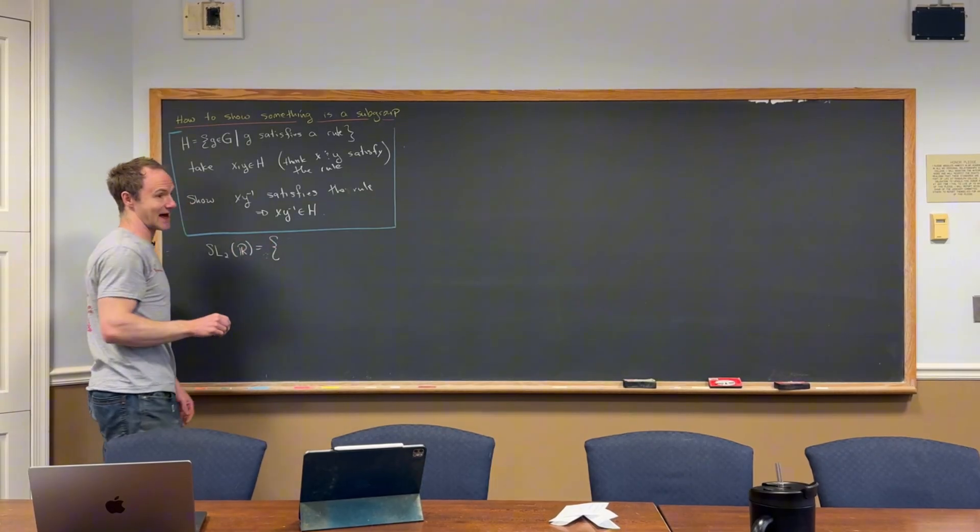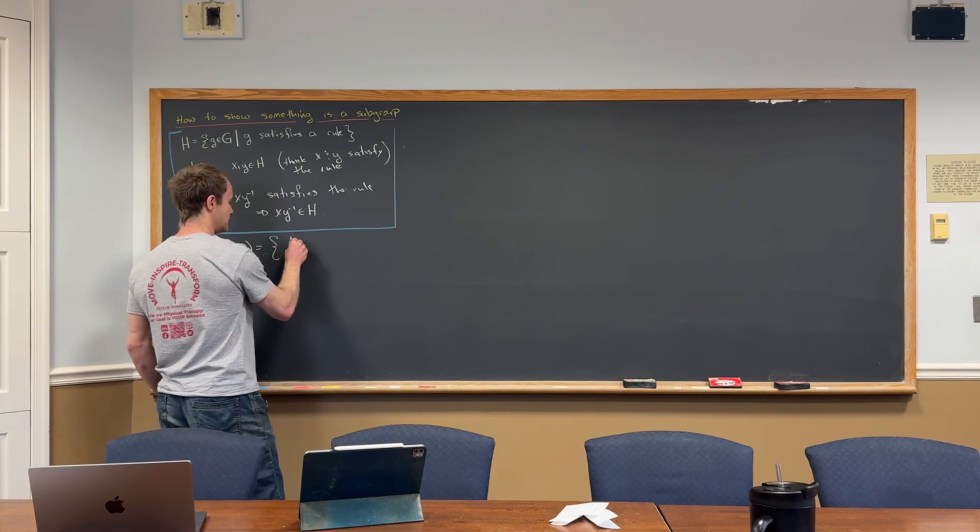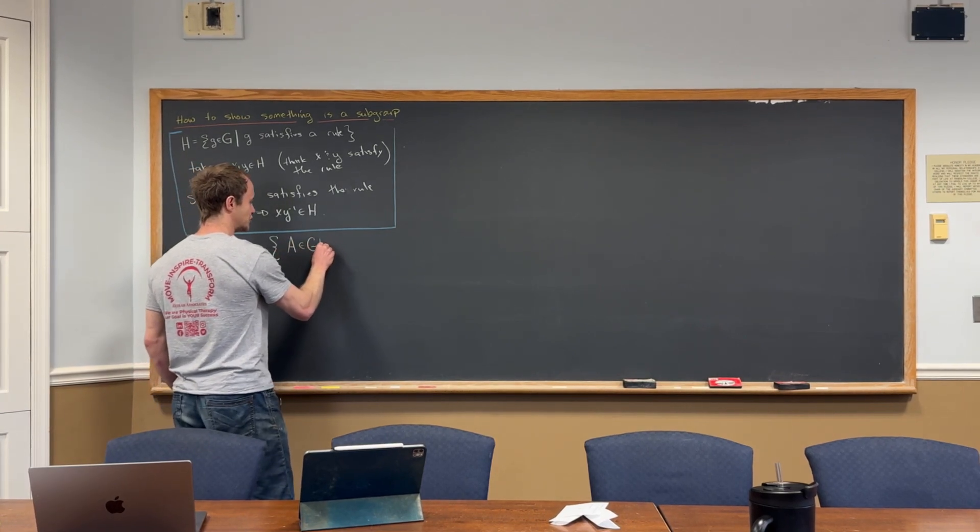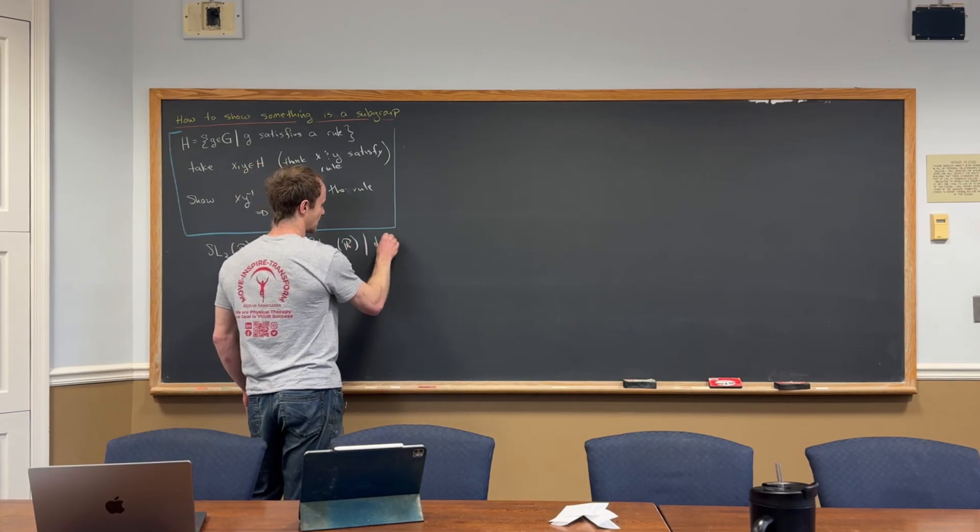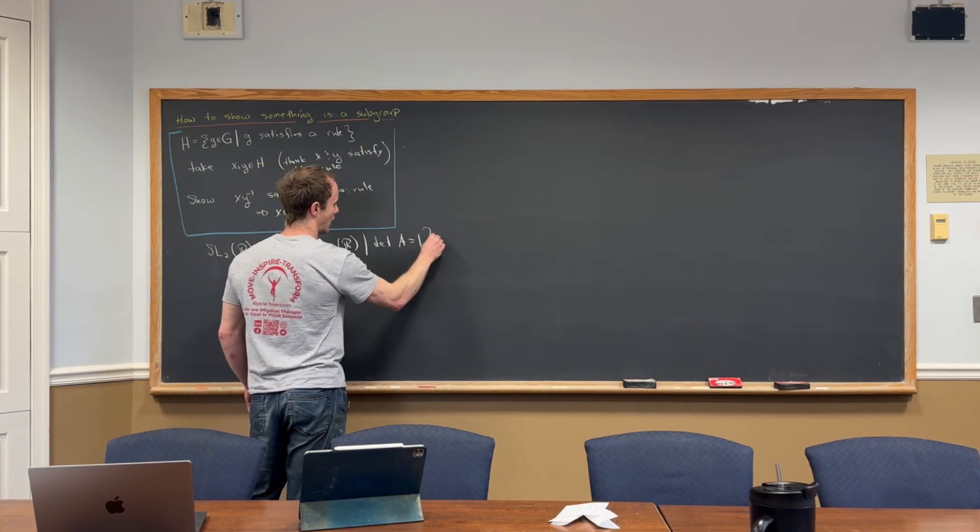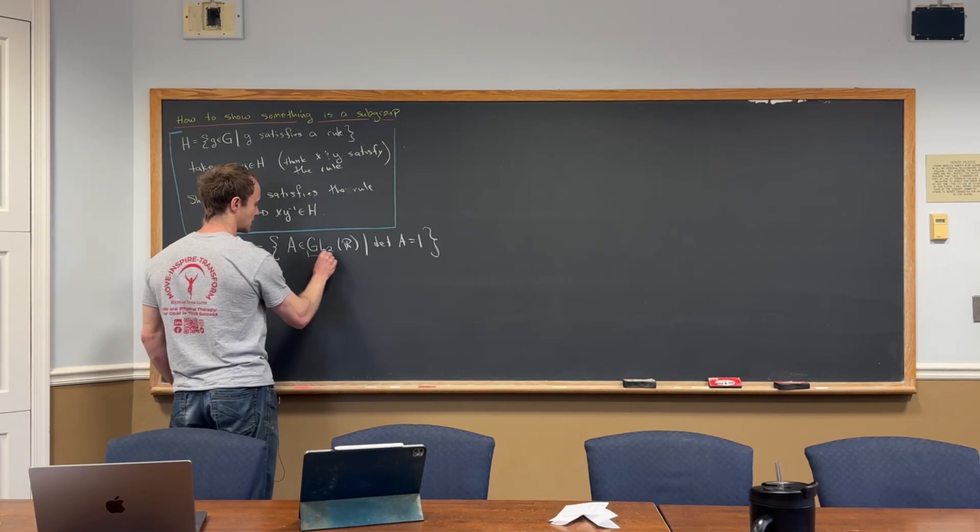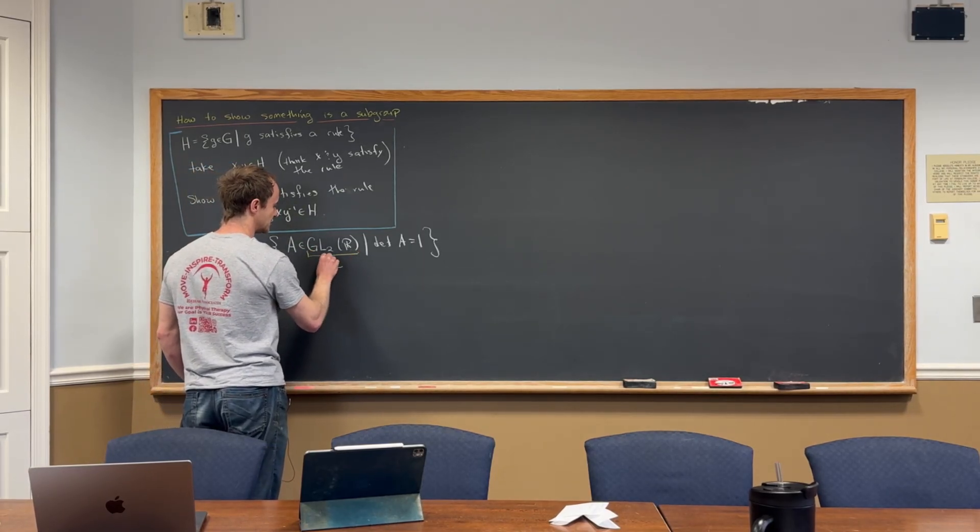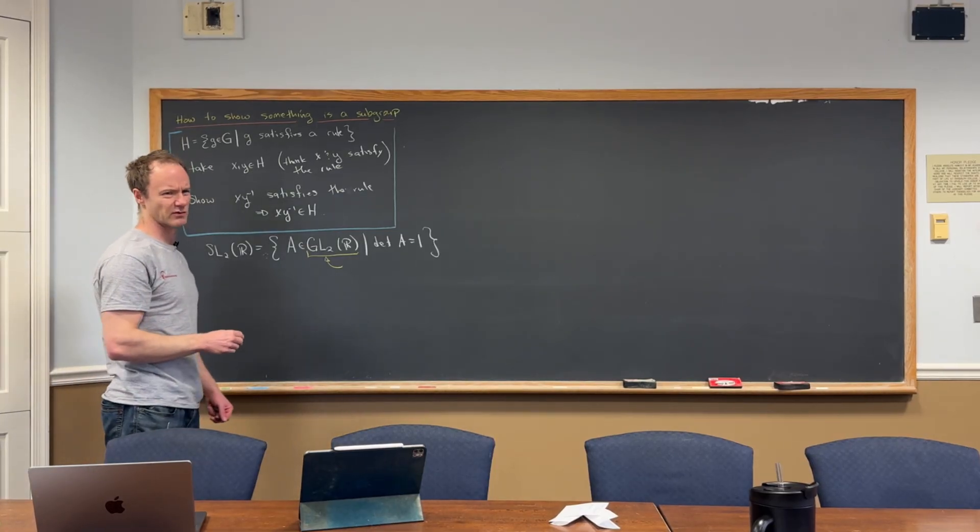Let's say we define this set capital SL(2,R). So you might say, well, what's that? Well, that's going to be all matrices A in GL(2,R) such that the determinant of A equals one. Now, just as a little reminder, I think that this GL2 was given as one of the very first examples of a group. But does anyone remember what it is?